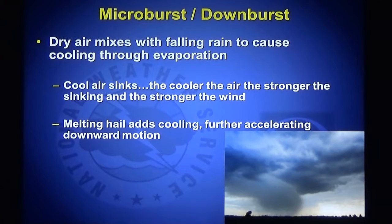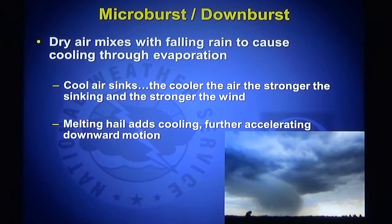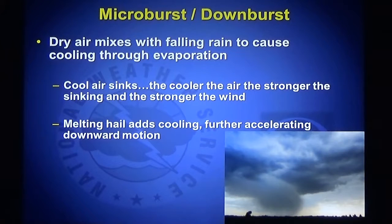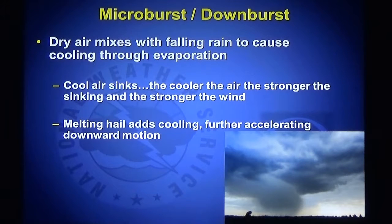You may have heard of a microburst or a downburst wind. Dry air mixes with the rain falling through a thunderstorm and causes cooling through evaporation — when water evaporates, the temperature cools. This cool air sinks, and the cooler the air, the stronger the sinking and the stronger the wind. Hail that's melting as it falls out of a thunderstorm adds to this cooling, further accelerating the downward motion toward the ground. These downbursts can be wet or dry — if there's a lot of rain with it, we call it a wet microburst; if not, we call it a dry microburst. Microburst winds are over a very small area; all microbursts are downburst winds, but a microburst is specifically over a small area, whereas downburst wind is any air flowing out of the thunderstorm and down to the ground at high speed.